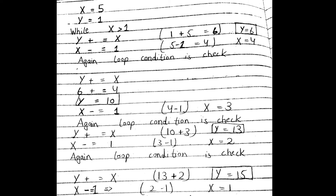First iteration: x = 5, y = 1. We add both: y new value = 6. Then x = x - 1, so x = 4. Condition 4 > 1 is true; y = 6 + 4 = 10, x = 3. Again loop: y = 10 + 3 = 13, x = 2. Again loop: y = 13 + 2 = 15, x = 1.